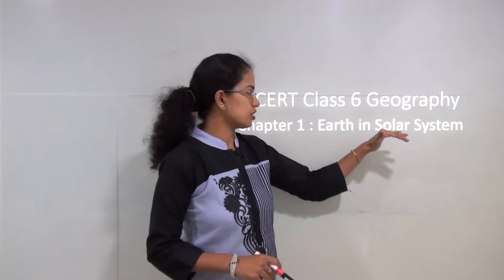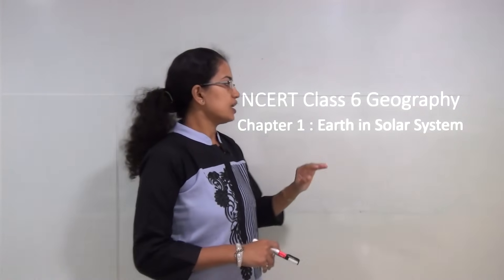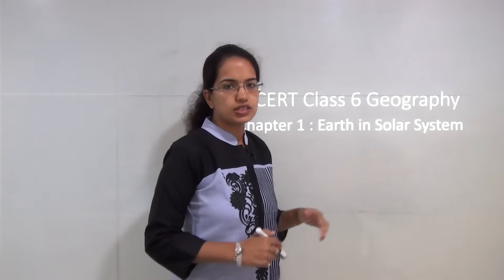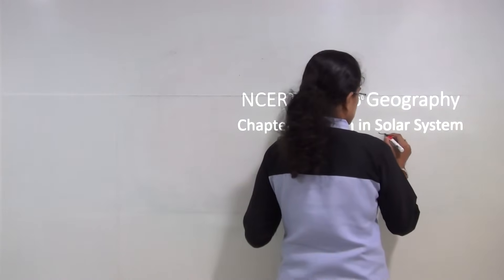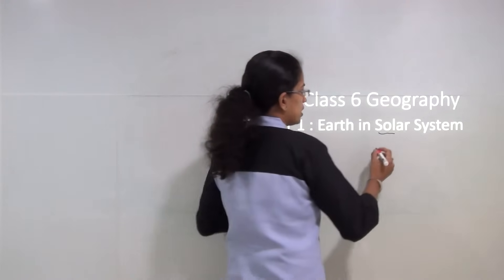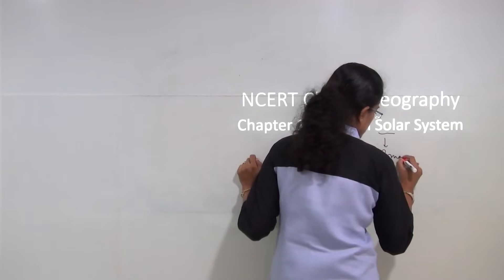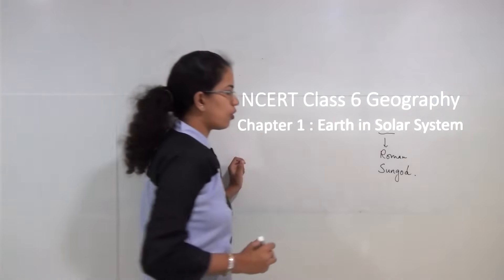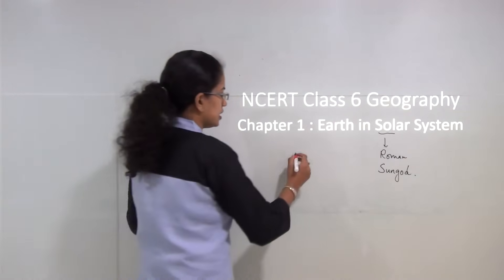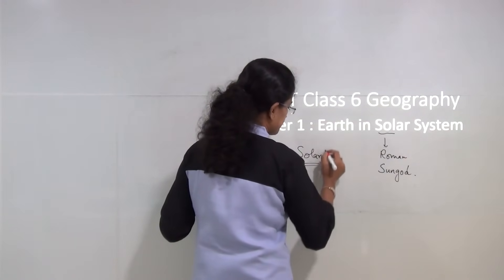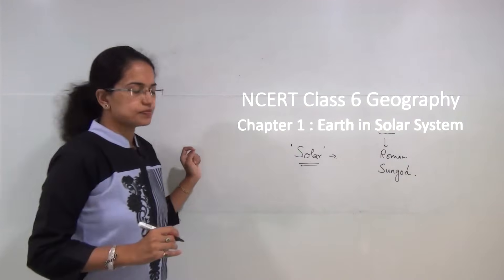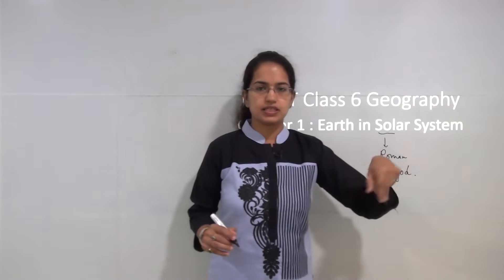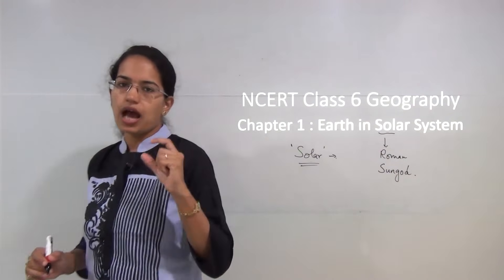Today we will be covering class 6th geography, the first chapter — Earth and the Solar System. Starting with the solar system, let's understand how this name came into existence. Solar is derived from 'sol', and sol in Roman means sun god. As a result, all words formed from sol, like solar, denote those related to the sun. What we will study in this chapter is the solar system, its major elements, and earth in particular.